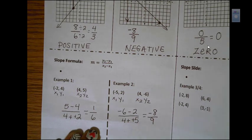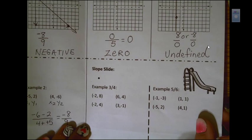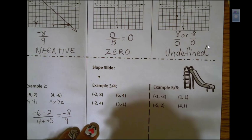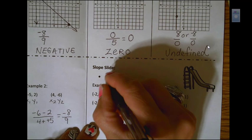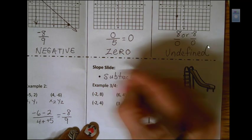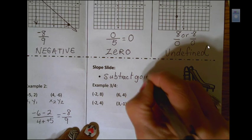Now I'm going to show you one other option. It's called slope slide. And what you need to remember to do is to subtract going down the slide.